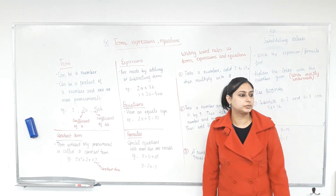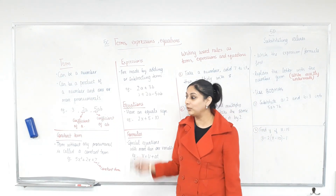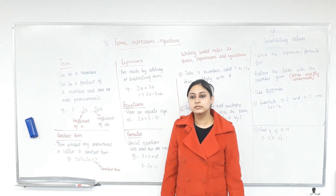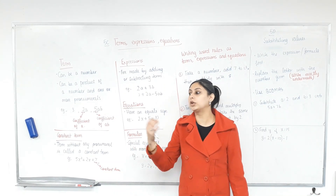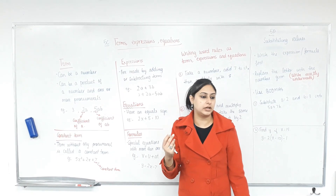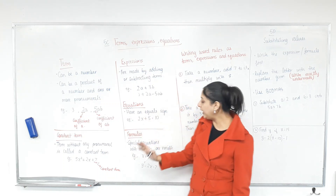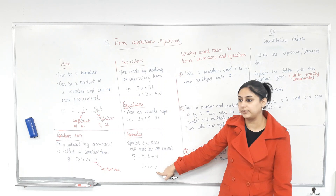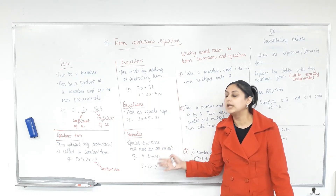Are all equations called formulas? No. So a formula needs to have at least two variables in it. Remember we did the rules and relationships — how many quantities were there? Two: input and output, X and Y. So a formula is a special equation that has more than one variable in it. For example, Y equals 2 times X minus 7, or V equals U plus AT — there are more than one variables in it, so it's a formula. If it only has one variable, it's not a formula, but it is still an equation.